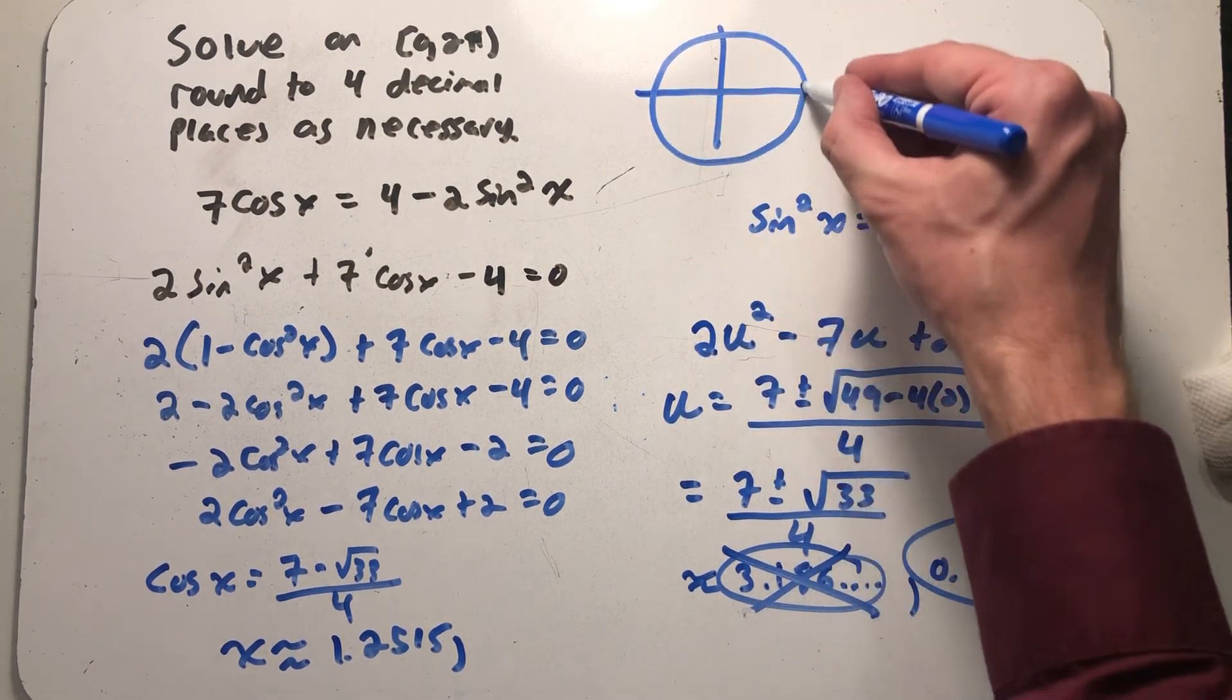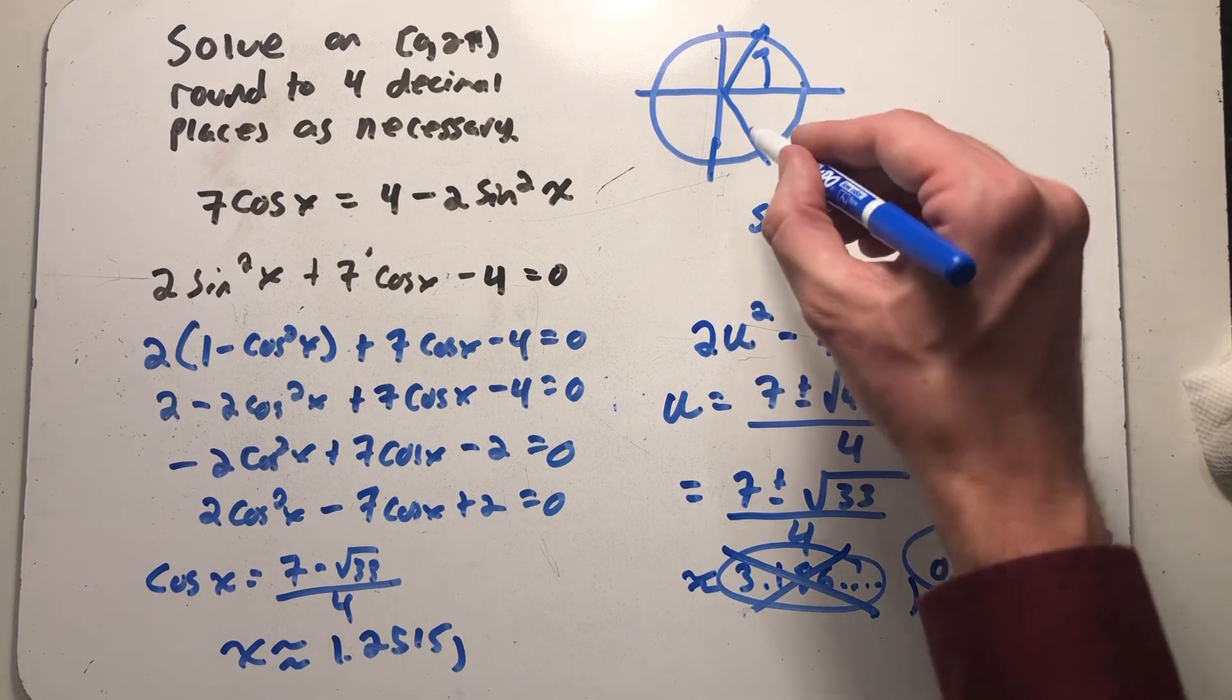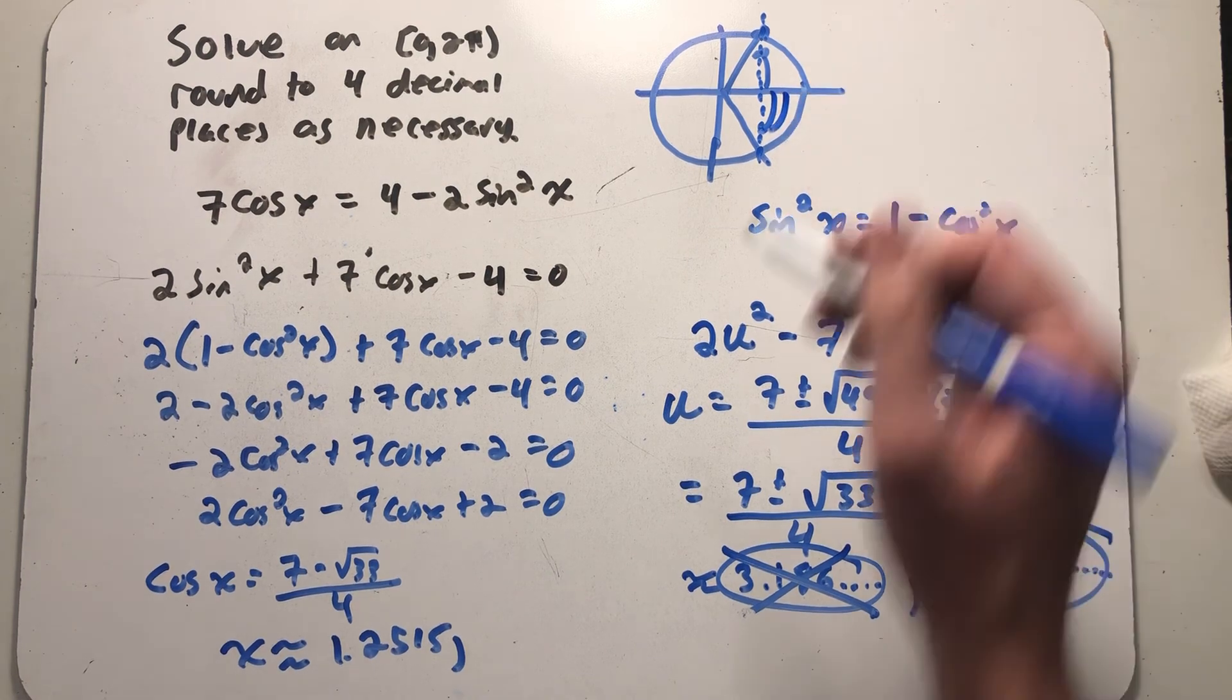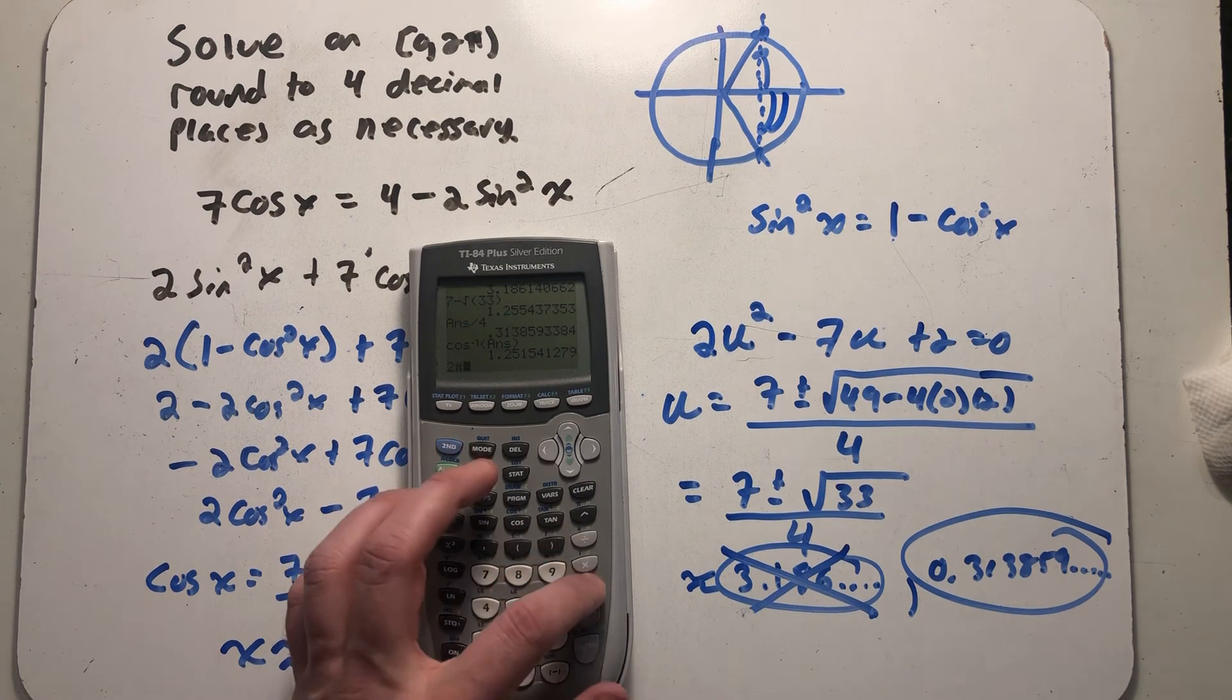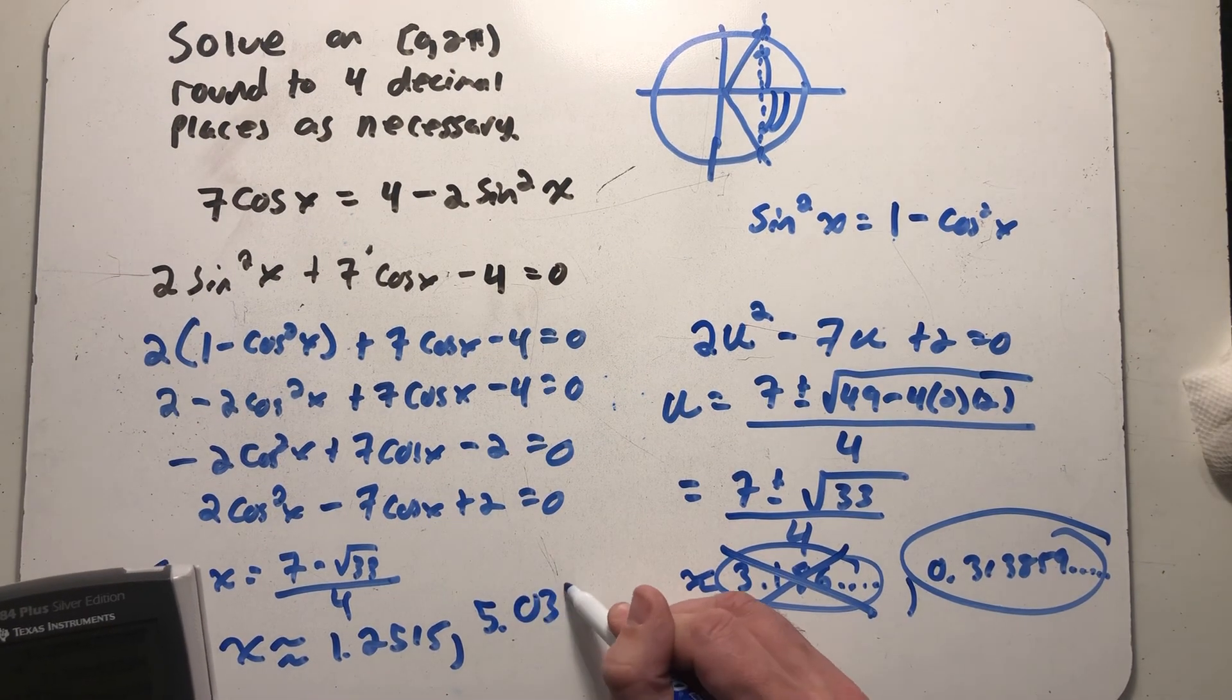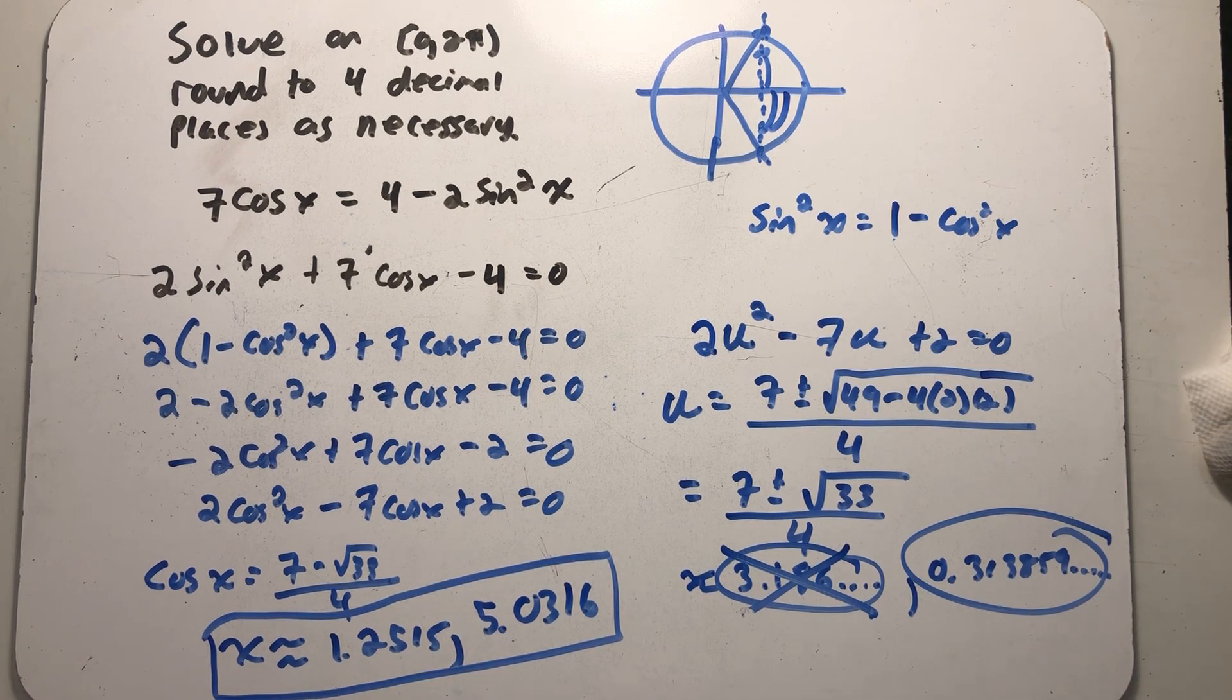Well, thinking about my unit circle, that's some angle in the first quadrant, right about there. I'm also looking for an angle in the fourth quadrant because that's where cosine is positive. If I think about it, I can use that 1.2515 as a reference angle. So two pi minus that value will be my other angle. About 5.0316. And there we have our two approximated solutions to four decimal places.